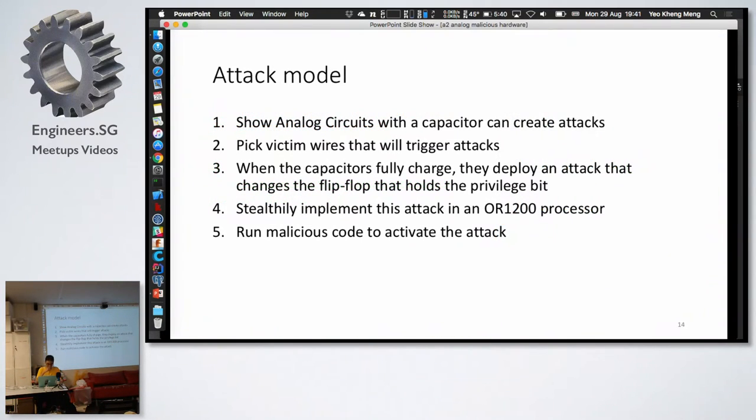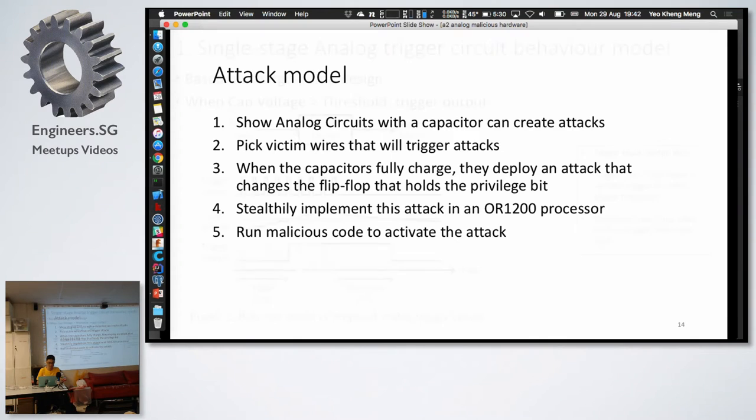I'm coming back to attack model again. I'll summarize the previous abstract. I've divided this into five steps. The first step is I will show the analog, whether an analog circuit can actually use a capacitor to generate an attack. The second one is to pick a victim wire to trigger it. The third one is when the capacitor fully charged, they deploy an attack. The fourth step is you stealthily implement this attack in this processor. And finally, the fifth step is what code you can run to actually activate this attack.